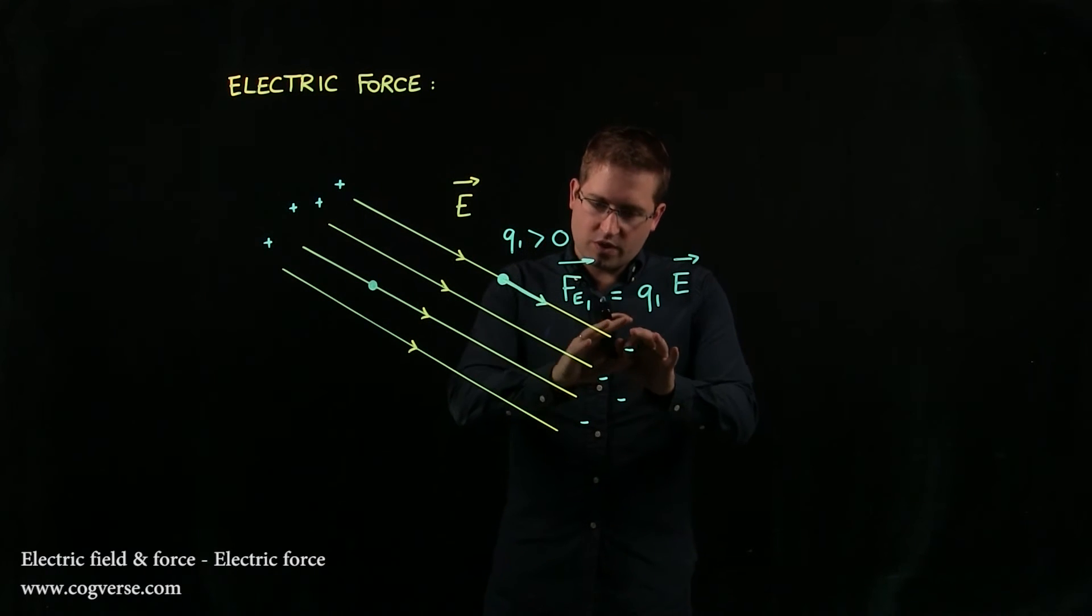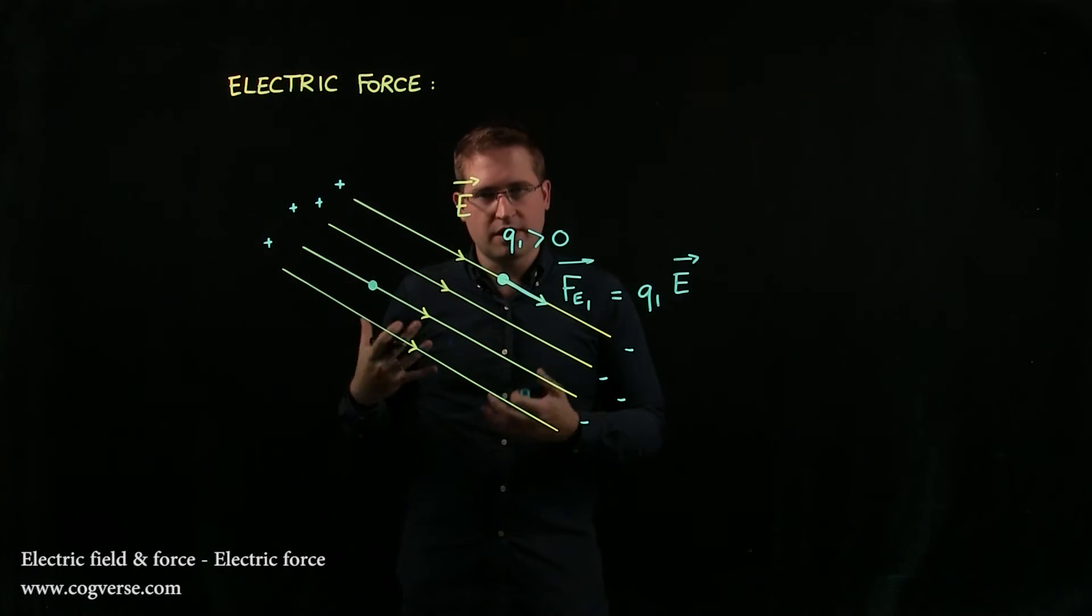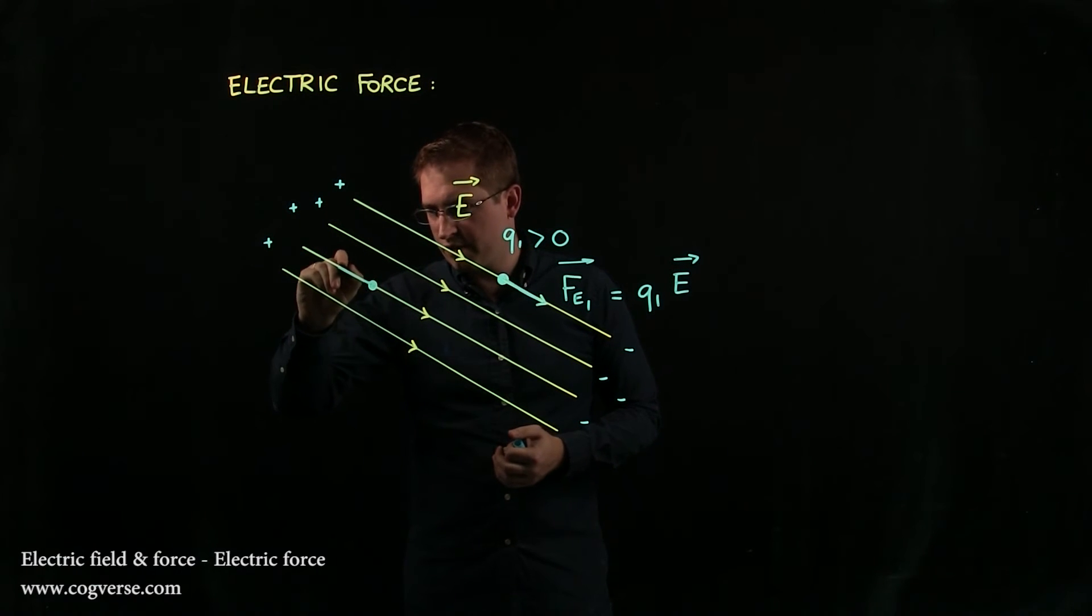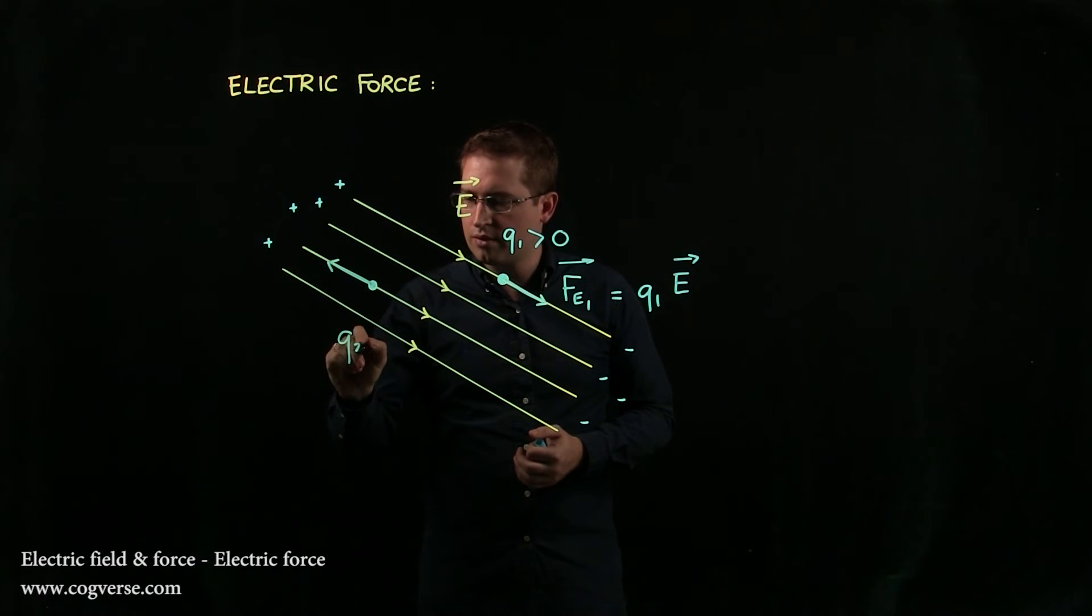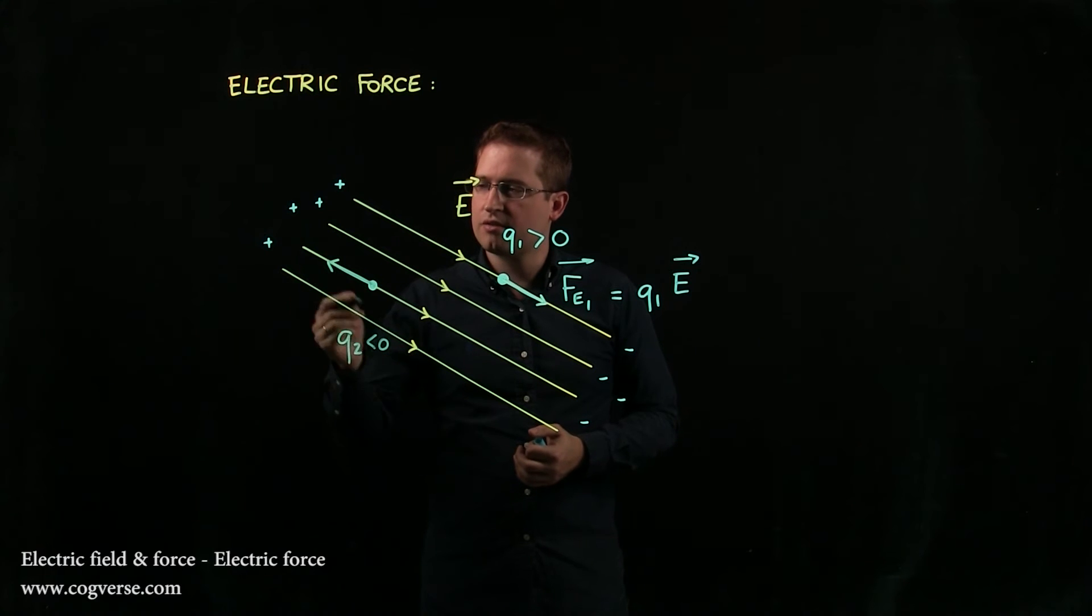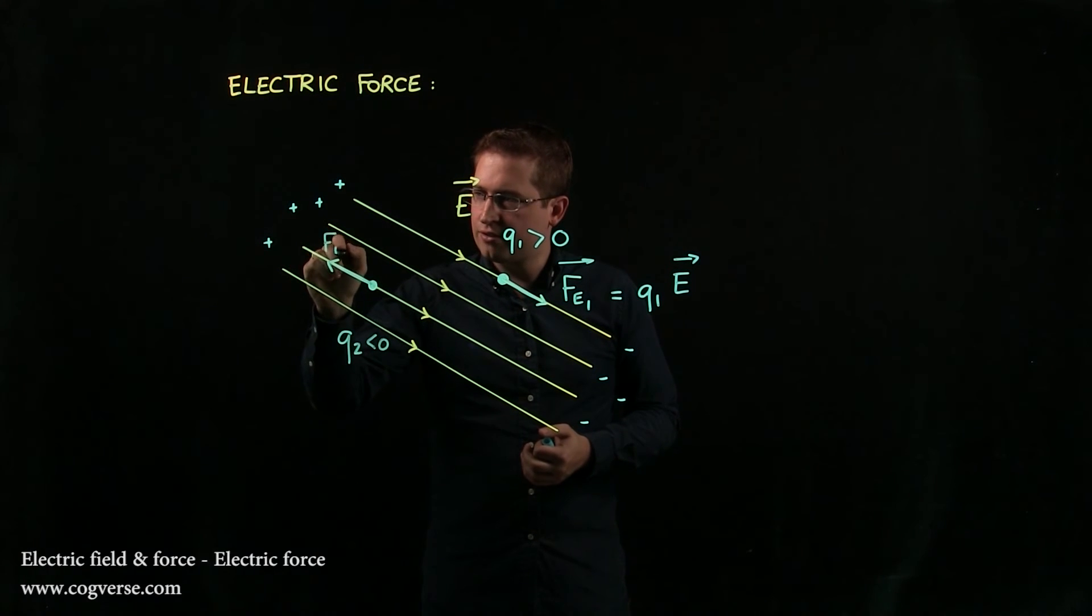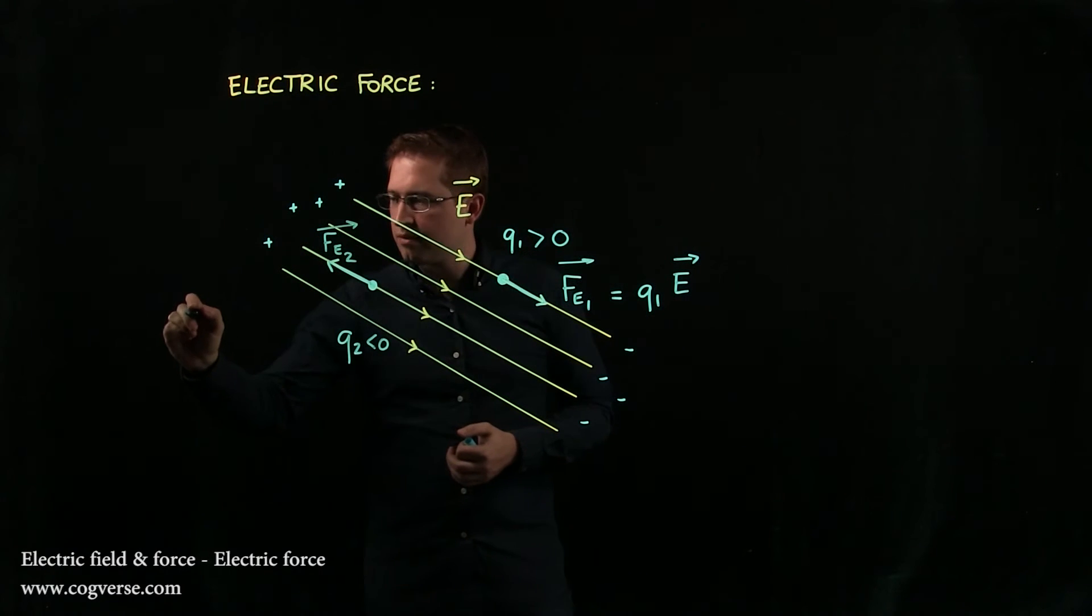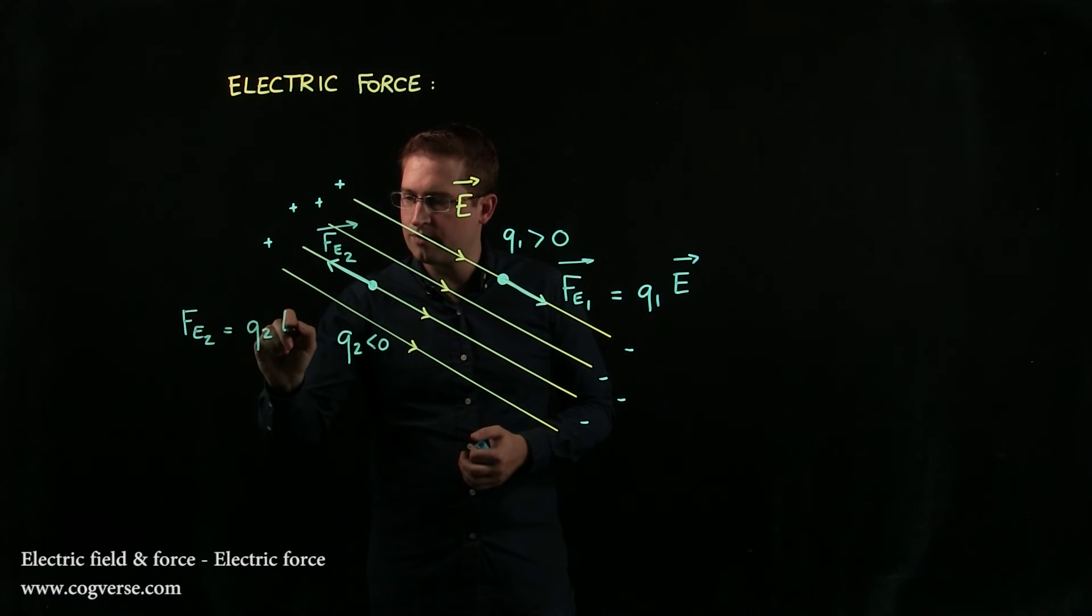Well, it's going to be repelled by this negative region and attracted by this positive region. And it's going to experience a force. If this is Q2, presumably negative, it will experience a force. Let's call it F of E2. And F of E2 is going to be Q2 times E.